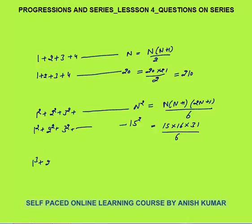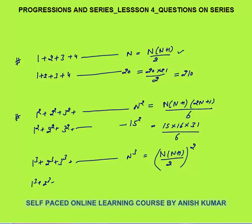Similarly, 1³ plus 2³ plus 3³ up to n³ — the sum of cubes of first n natural numbers. Remember, all three series are for first n natural numbers. The answer for the sum of cubes is n into n plus 1 by 2, whole square. For example, 1³ plus 2³ up to 10³ gives 10 into 11 by 2, that is 55 squared, which equals 3025.